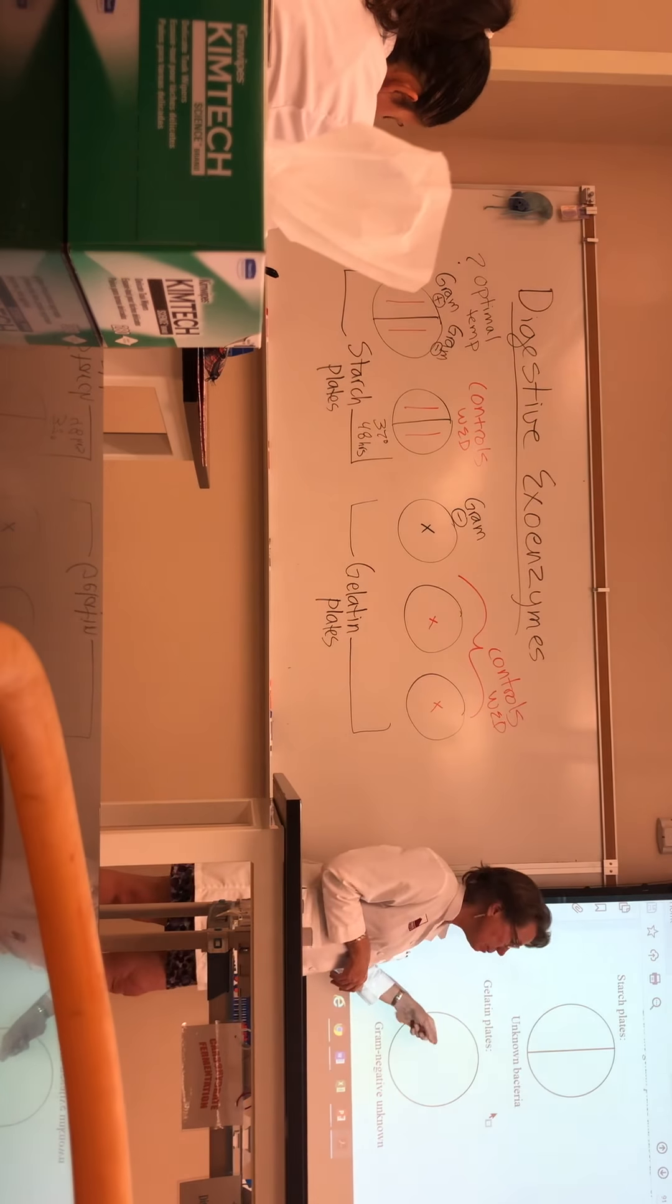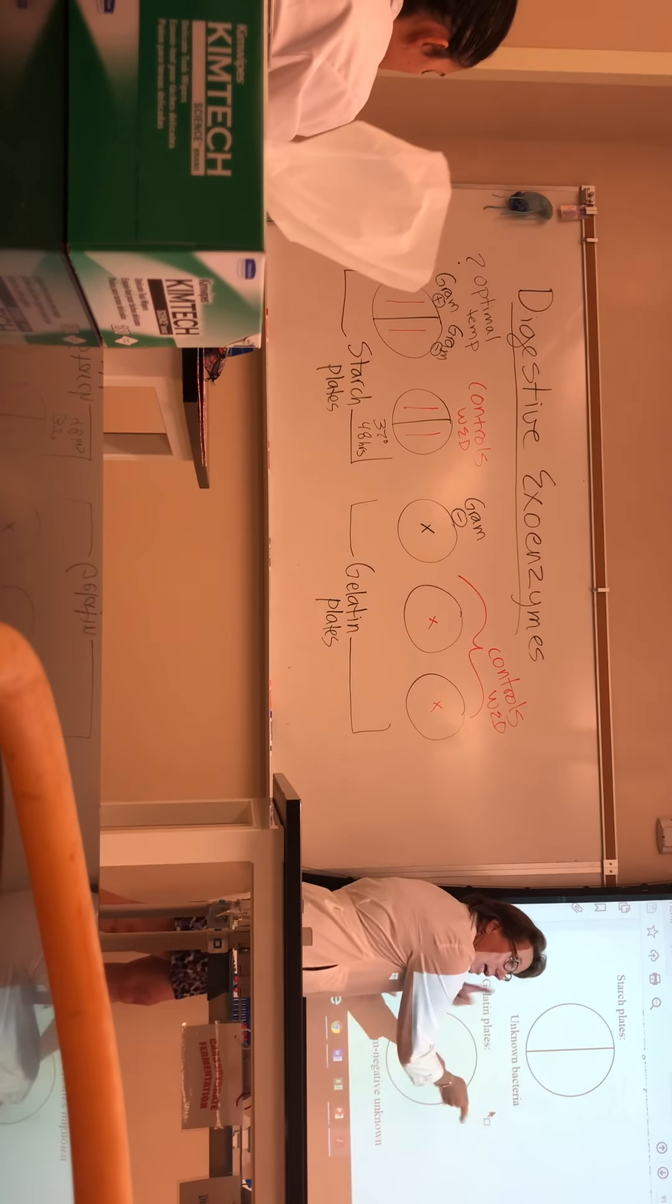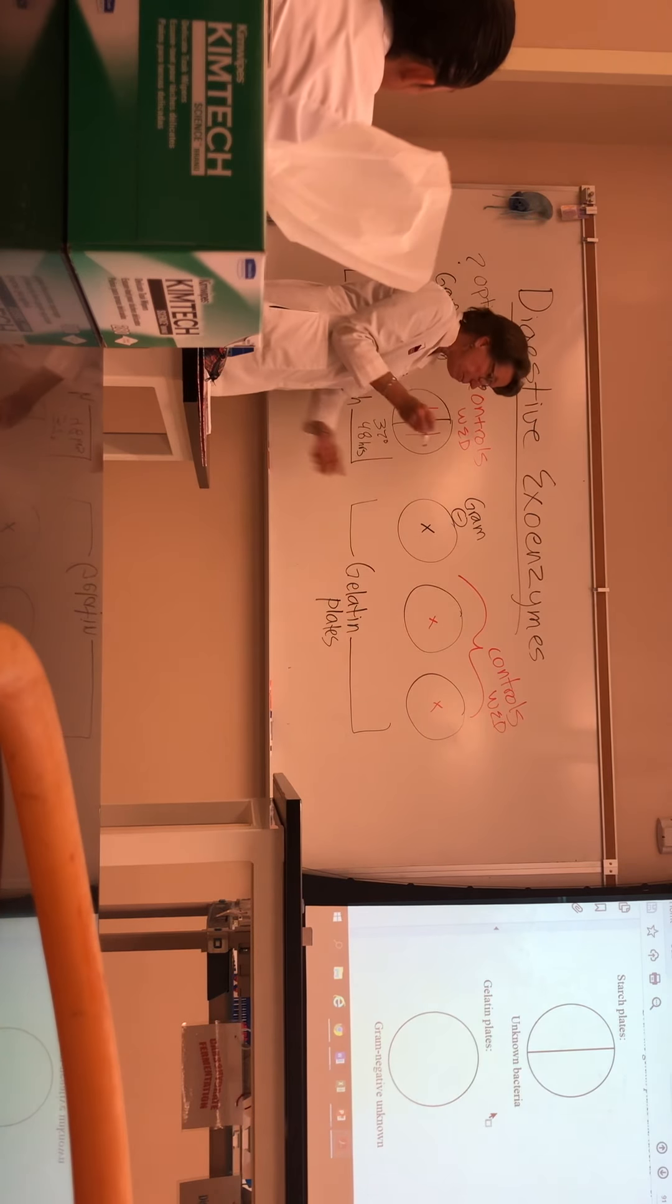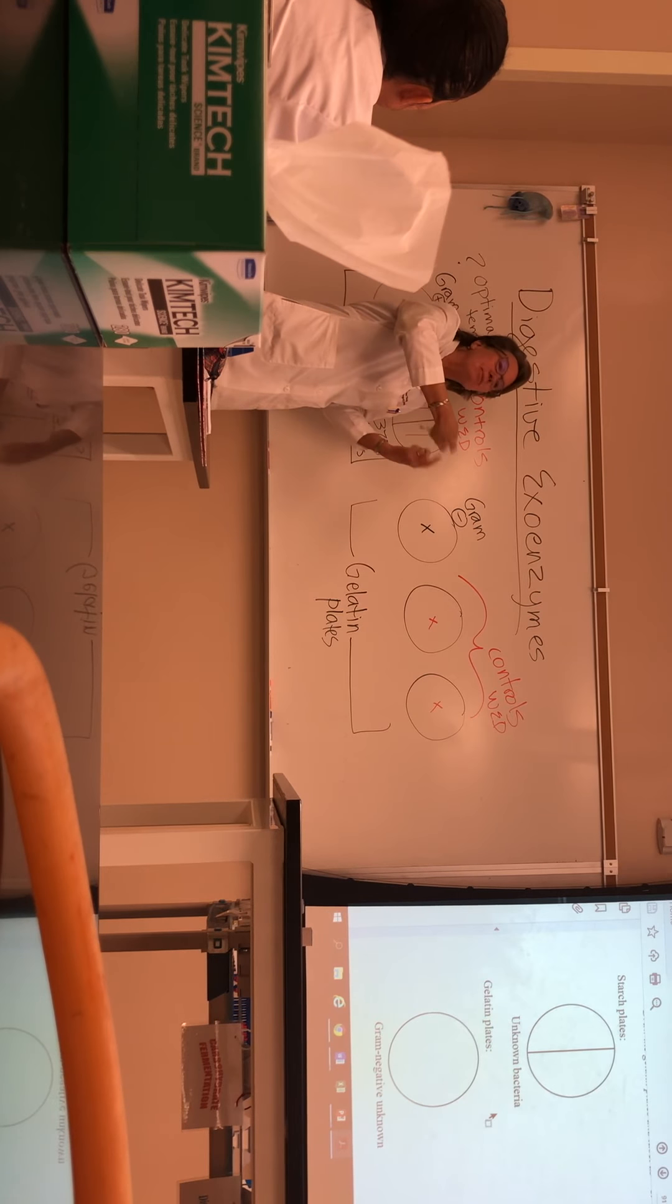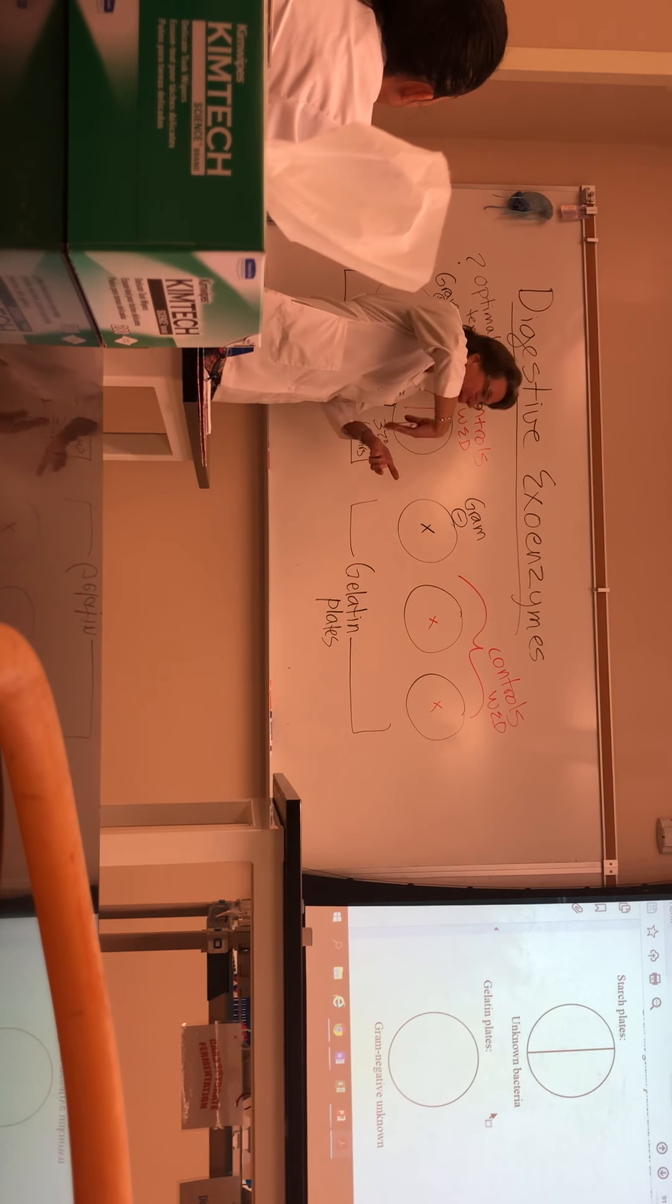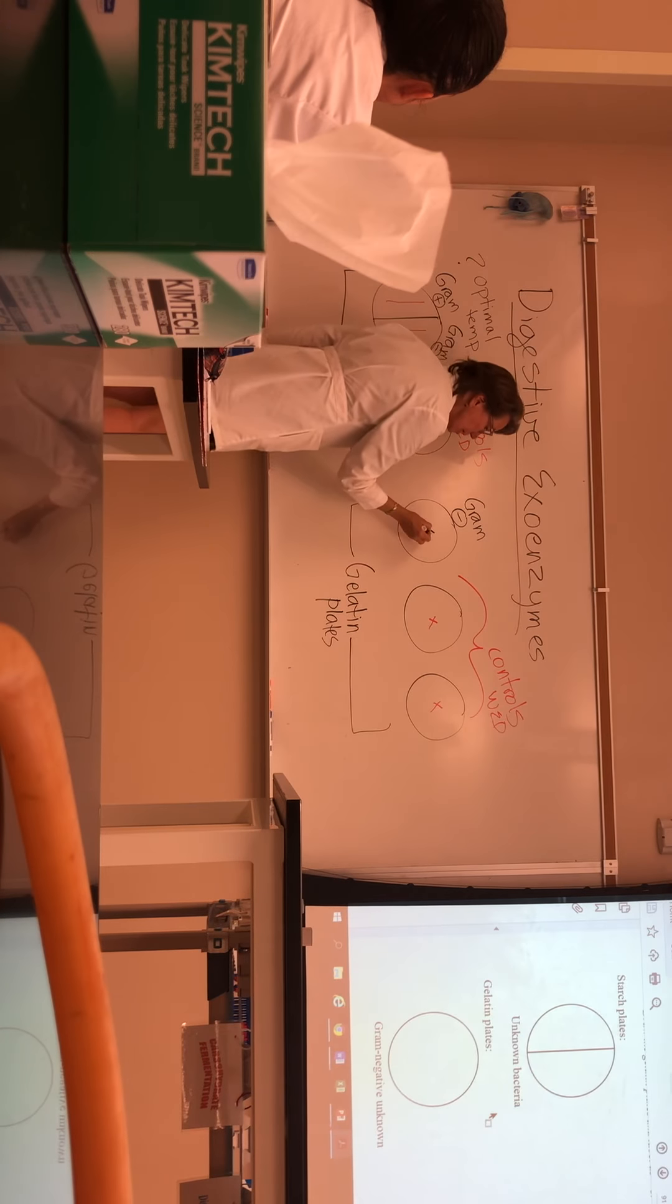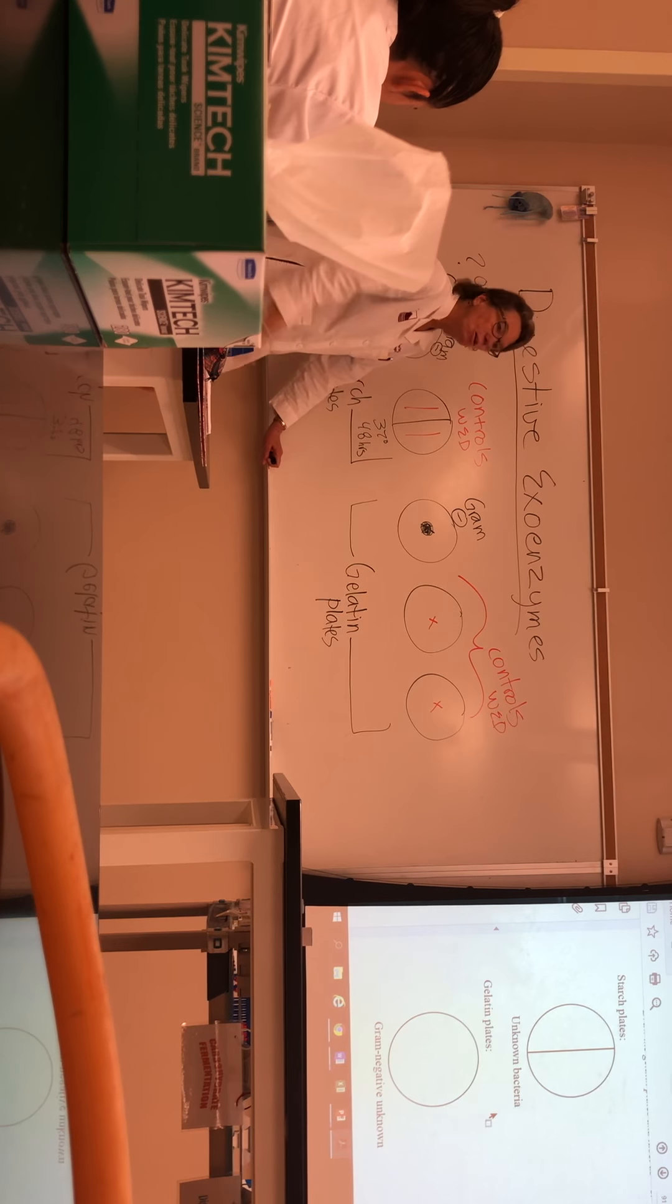Okay. So the gelatin plates, you're going to inoculate differently though, guys, not with a straight line, not with a streak. So if you read the description up there, you're going to take your gram negative on your loop, and again, if you don't see much, it's okay. Go to the sort of bottom of your slant where there's some liquid from condensation down there. Kind of roll your loop around in that sort of watery stuff and then just drag it over the surface of the slant. You'll pick up bacteria. Now what you're going to do is literally just inoculate a little blob in the middle, just like that.